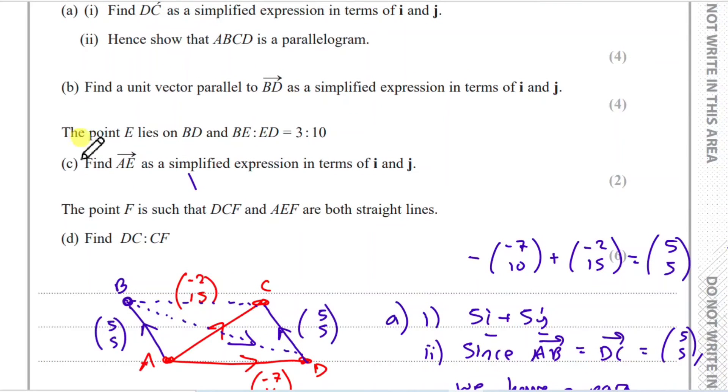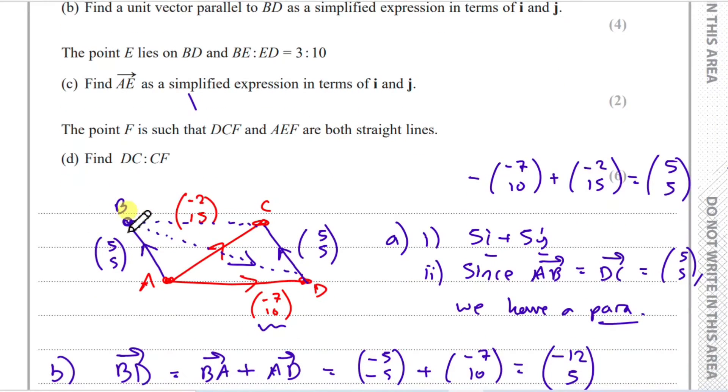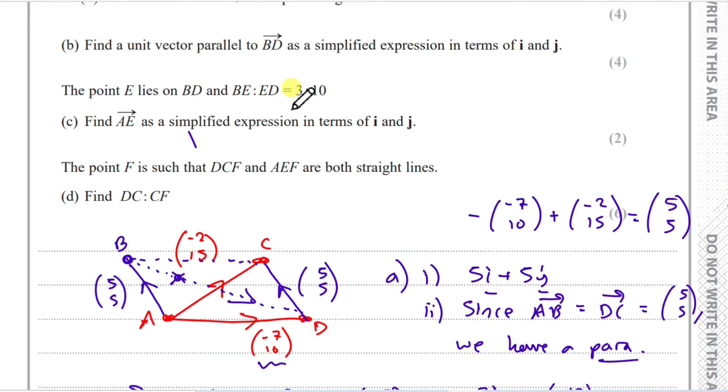So now for the next part, it says the point E lies on BD such that BE to ED, the ratio is 3 to 10. So I drew line from B to D. So that's our vector arrow. And it's saying that it's closer to the first three parts here, whereas the rest are 10 parts there. So it's probably somewhere here. This could be like roughly where it is. It's pretty close to B, but far away from D. So they want us to find AE as a simplified expression. There's a really nice trick. All this is telling us here, if there's a total of 3 plus 10, 13 parts, that means the line, the new one, BE, it's just basically 3 over 13 of BD.